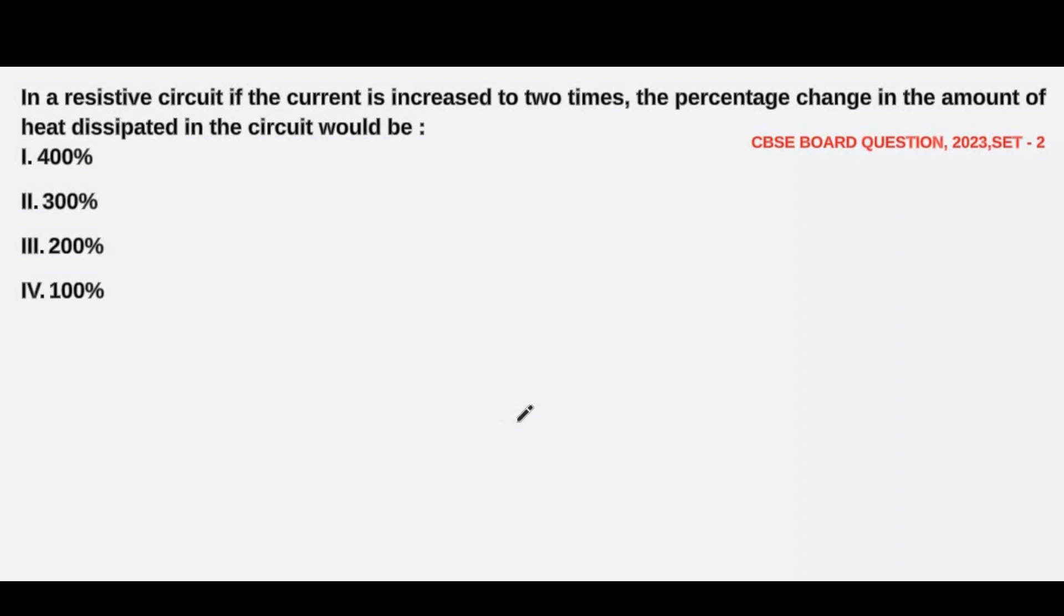So here we have a resistive circuit in which we have increased the current to two times—we have doubled it. We have to find out what is the percentage change that will be observed in the amount of heat dissipated. First, let's write down the formula and then we'll solve it.